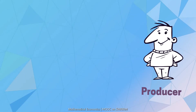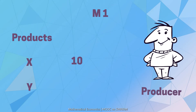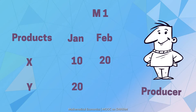A producer sells two products, X and Y, in two different markets, M1 and M2. In market M1, he sells 10 units of product X and 20 units of product Y in the month of January. In February, he sells 20 units of product X and 40 units of product Y.